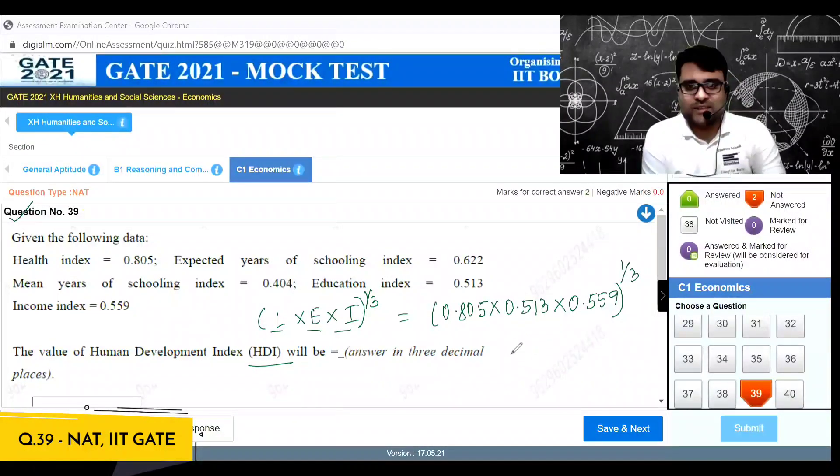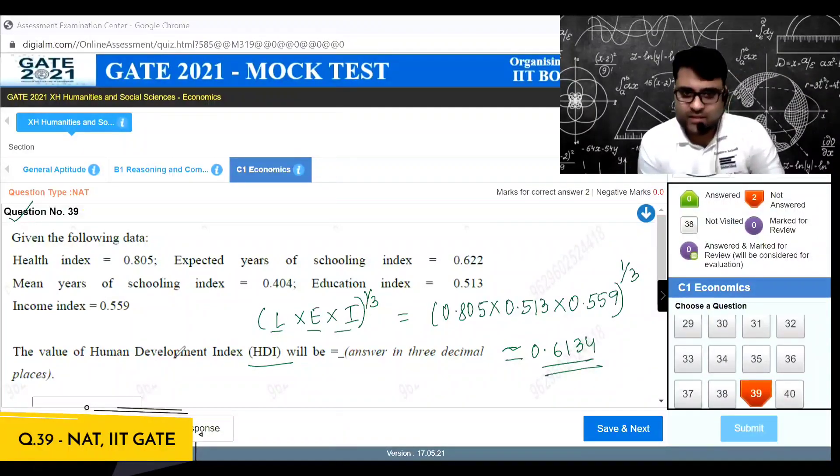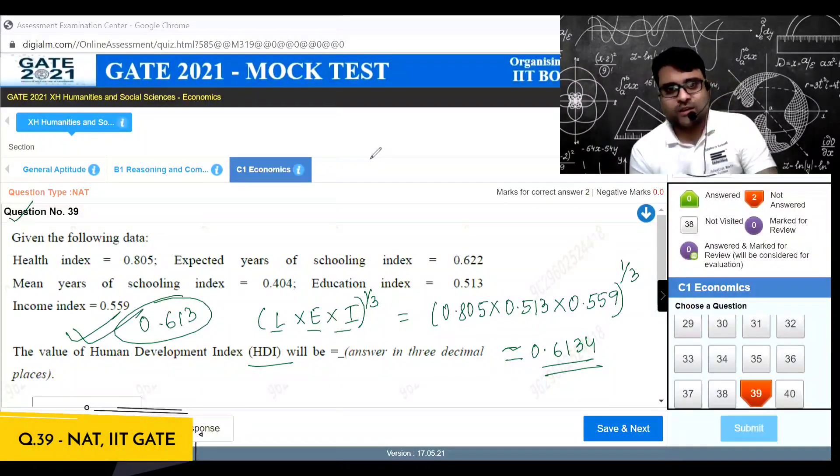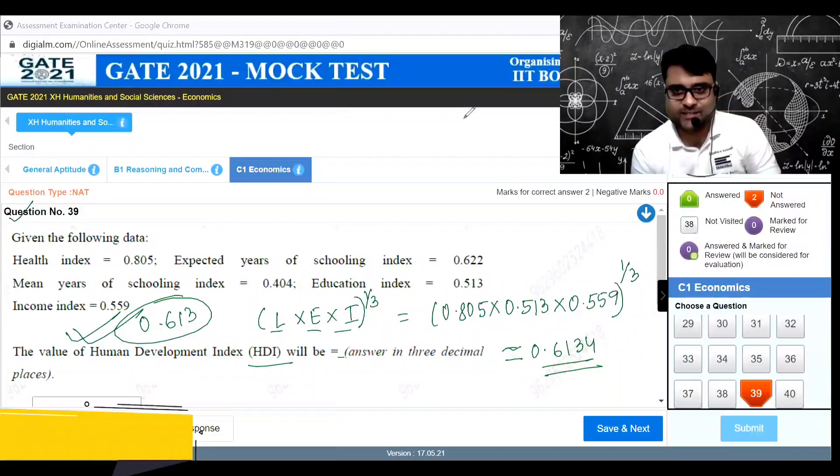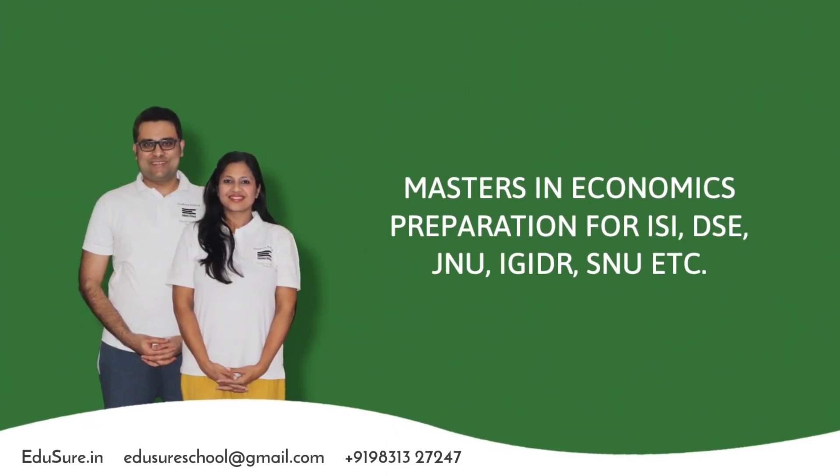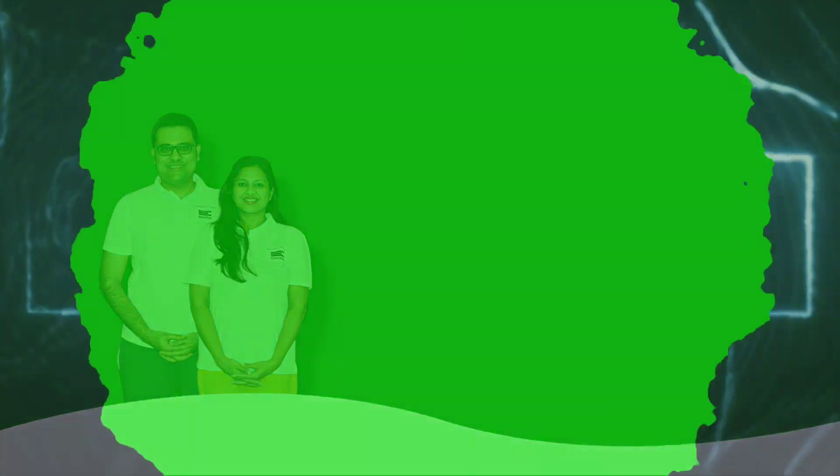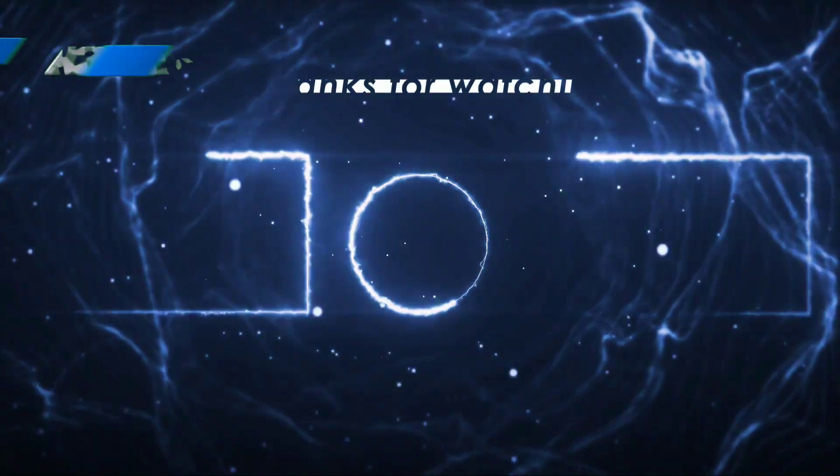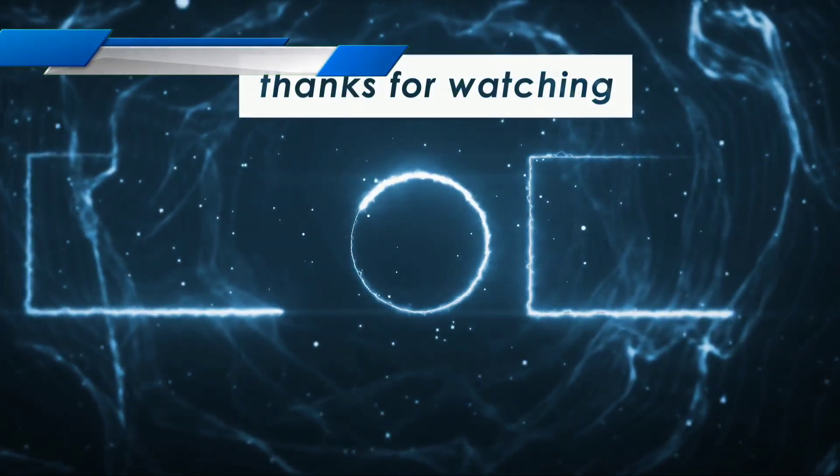So what am I going to do here? 0.805 multiplied by 0.513 multiplied by 0.559, whole to the power 1 by 3, and what will this come out to be? This will come approximately 0.6134 something like this. You enter the answer as 0.613 and you'll get that as correct. So this is about finding out the Human Development Index.